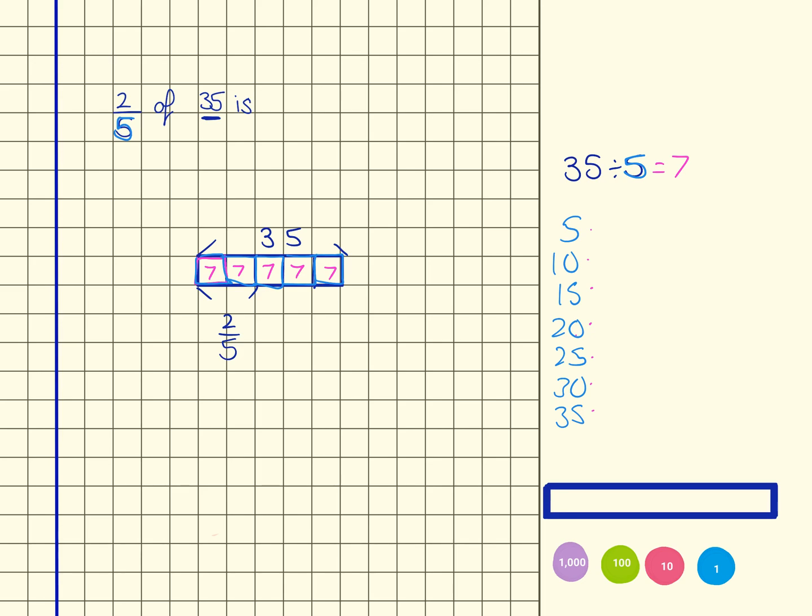What I'm now going to do is take the 1 fifth. So I now know that 1 fifth equals 7. I'm going to take that and I'm going to use that to calculate what 2 fifths would be. So this is the 2 fifths I'm calculating here.